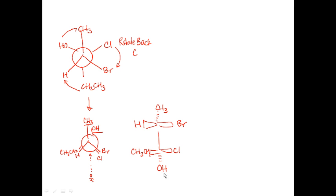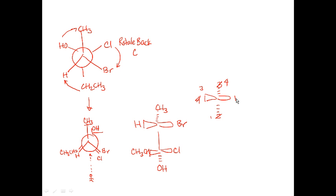Once I have this in the Fischer projection, I can now simply analyze the two carbons separately. Looking at the top carbon: bromine is group one, hydrogen is four, CH3 versus a carbon with Cl, O, and another C attached — that's two and three respectively. I'll switch groups four and three and groups one and two. Going from one to two to three is now counterclockwise, which means the front carbon is S configuration.